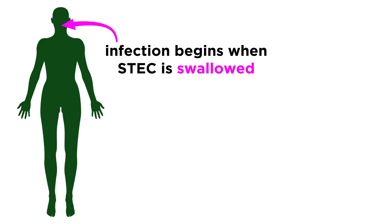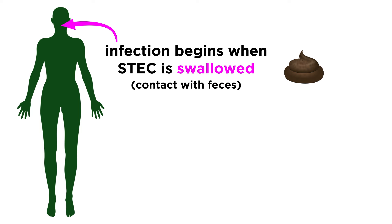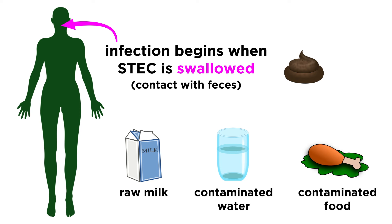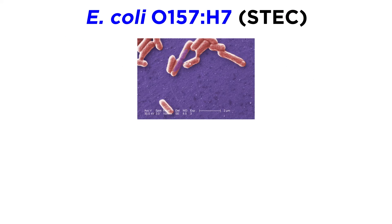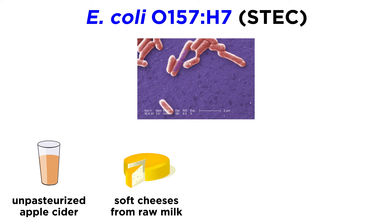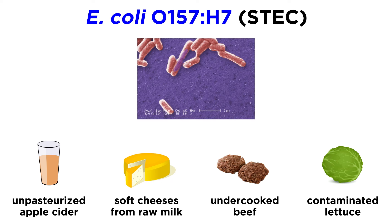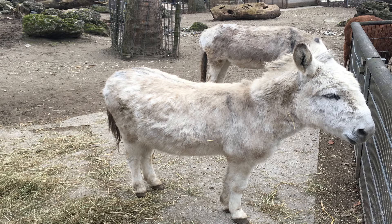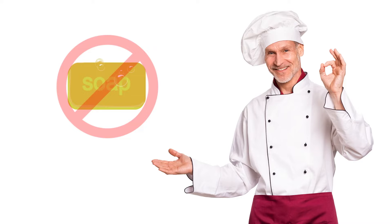An infection begins when you swallow STEC, meaning that you've gotten a microscopic amount of human or animal feces in your mouth. That may sound gross, but it happens a lot more than you think. Common sources include raw milk, contaminated water, or contaminated food. Foods considered high risk for E. coli O157 include unpasteurized apple cider, soft cheeses made from raw milk, and sometimes undercooked beef or contaminated lettuce. Sometimes people get infected by touching surfaces at petting zoos, swallowing lake water while swimming, or eating food prepared by someone who didn't wash their hands after using the bathroom.